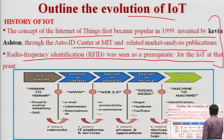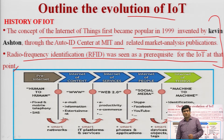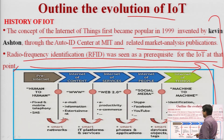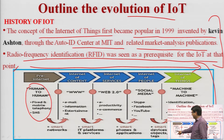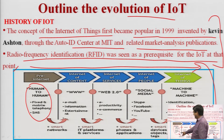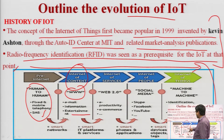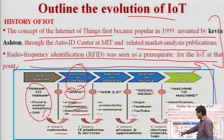Looking at the evolution diagram, we evolved from pre-internet — where humans connected to humans via large mobile phones for calls and SMS — to the internet of content with the World Wide Web enabling chat, email, and entertainment. Then came internet of services with e-commerce and web 2.0, followed by internet of people where smartphones enabled connection through Skype, Facebook, YouTube, and WhatsApp.